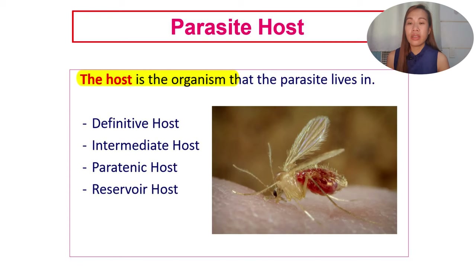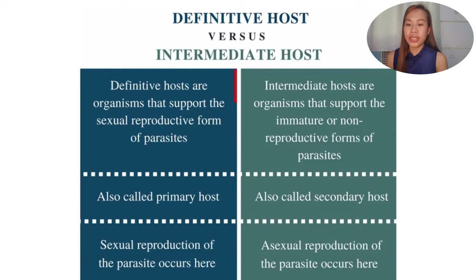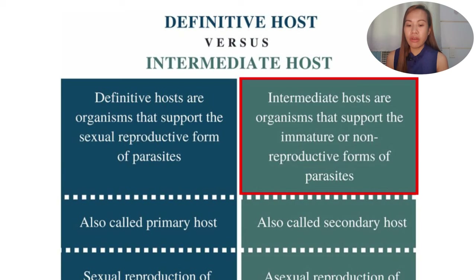Parasite hosts are the organisms where parasites live. They can be termed definitive, intermediate, paratenic, or reservoir. Definitive hosts support the sexual reproductive form of the parasite — they are called primary hosts. Intermediate hosts support the immature or non-reproductive forms — they are called secondary hosts. Sexual reproduction of the parasite occurs in the definitive host, forming zygotes.